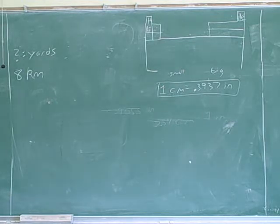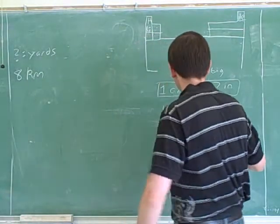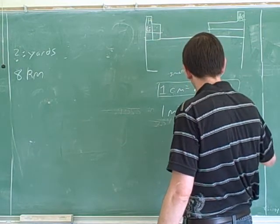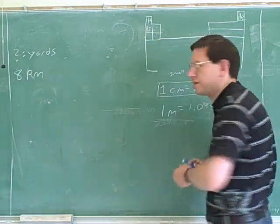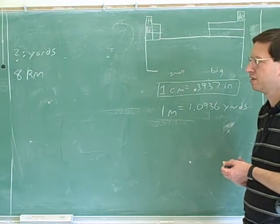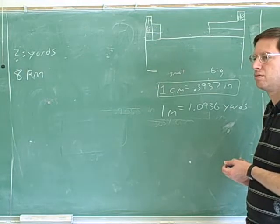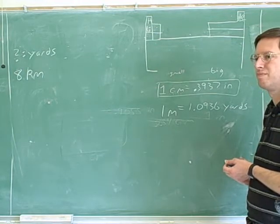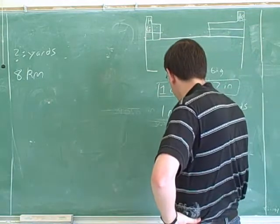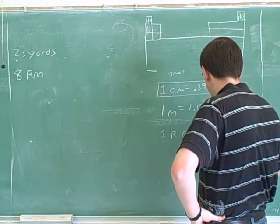Yeah, so let's write that down. One meter, how many yards is that? 1.0936. Good. One meter is 1.0936 yards. And one kilometer is 1,000 meters. That's right. So one kilometer is 1,000 meters.